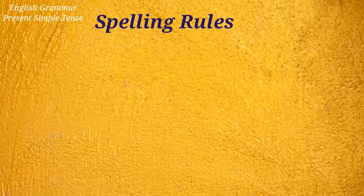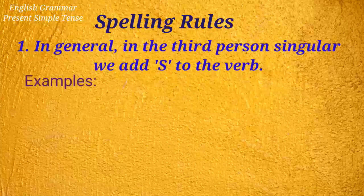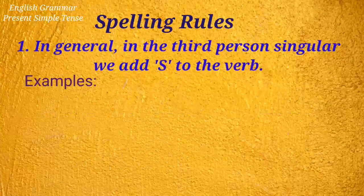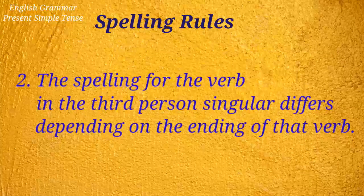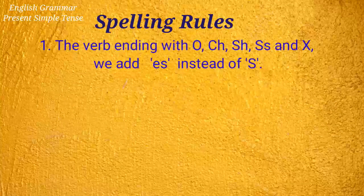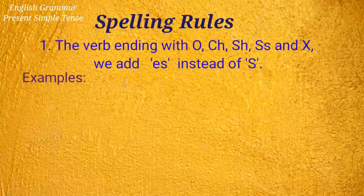Now let us see some spelling rules. In general, in the third person singular we add 's'. For example: I/you/we/they work, but he/she/it works. The spelling for the verb in the third person singular differs depending on the ending. For verbs ending with -o, -ch, -sh, -s, or -x, we add 'es' instead of 's'.